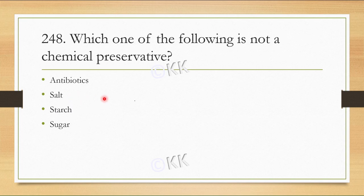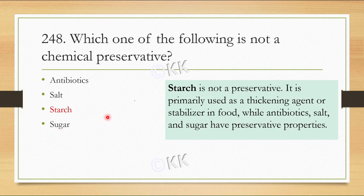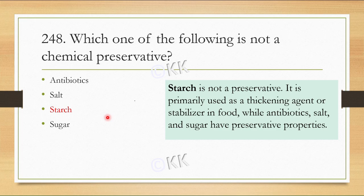Next question: Which of the following is not a chemical preservative? Option A antibiotics, option B salt, option C starch, option D sugar. The correct option is C, starch. Starch is not a preservative. We use it primarily as a thickening agent and for food stabilization. Antibiotics, salt, and sugar are used as preservatives.